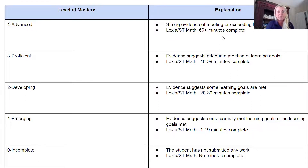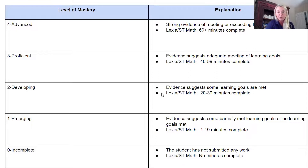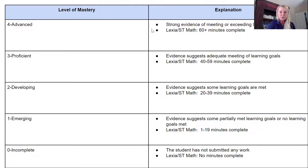We also have a numeric system for tracking Lexia and SDMav minutes. If a student completes 60 or more minutes on each program per week, they get a four; 40 to 59 minutes is a three; 20 to 39 minutes is a two; 1 to 19 minutes is a one; and no minutes completed is a zero or incomplete. We need a way to track how students are doing on their weekly Google Classroom assignments, so this will be our system.